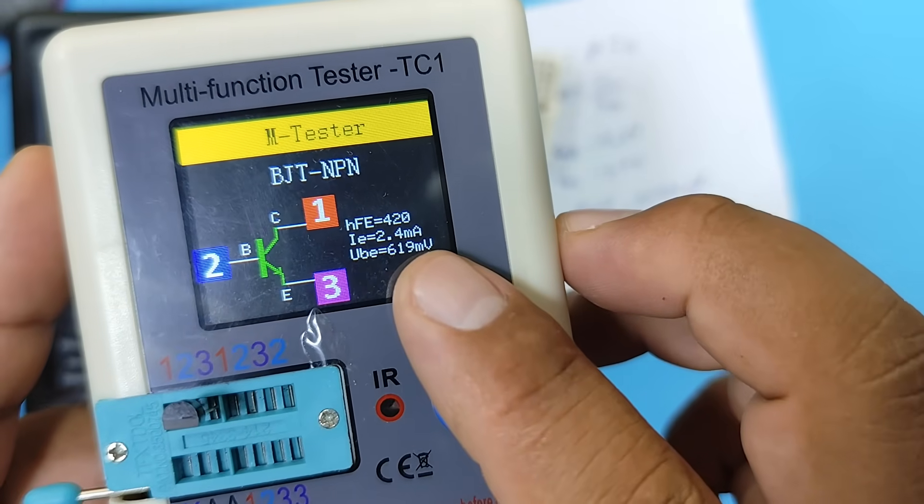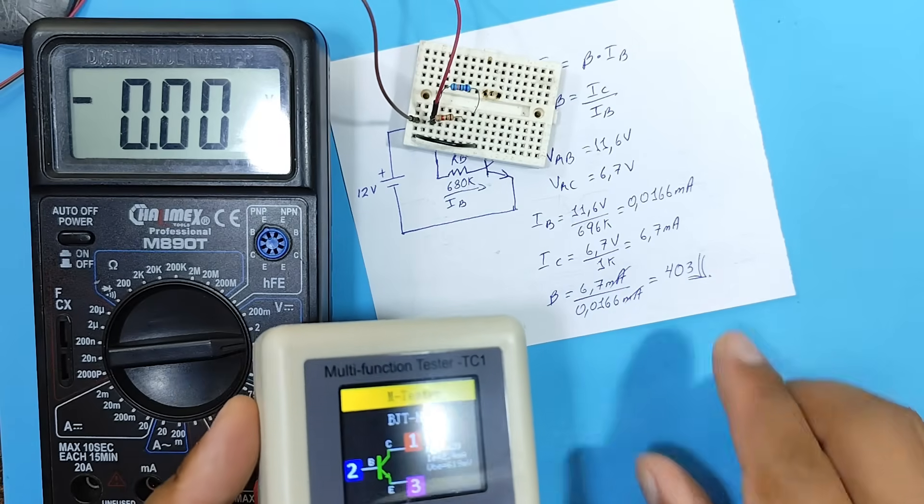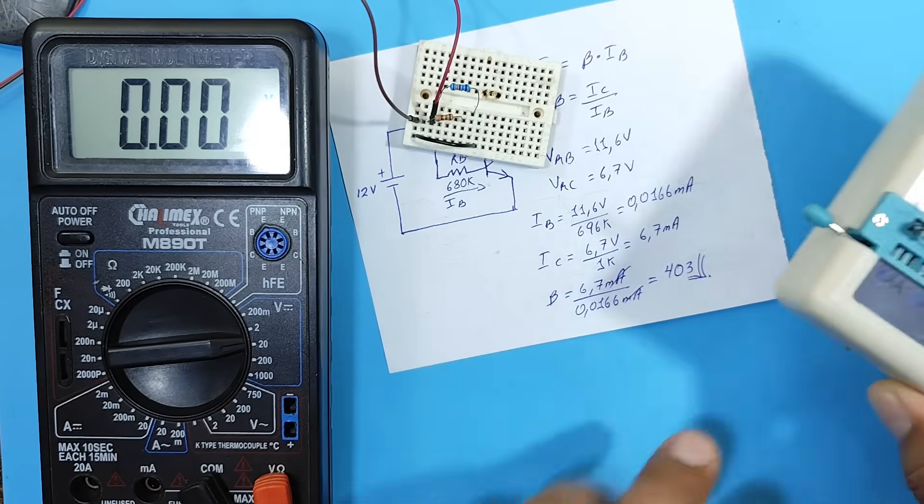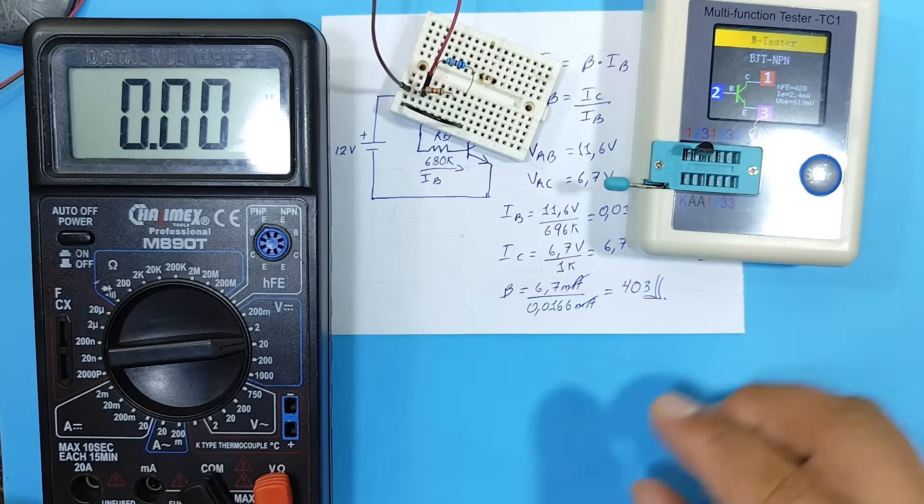And as we can see, the gain is 420. And the calculated value is 403, which is very close to the value given by the instrument.